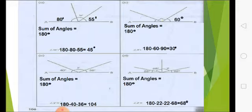In example number D, we are actually given with three given angles. So we will use the same formula sum of angles on a straight line is 180 degrees. So we will do this simple subtraction 180 minus 22 minus 68 minus 22 and the answer will be 68 degrees.